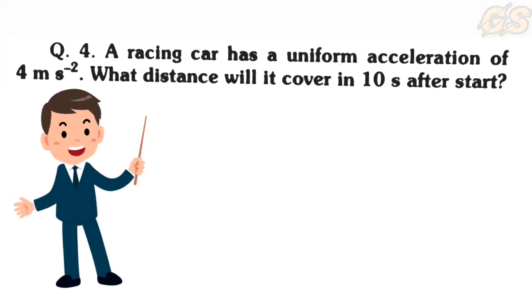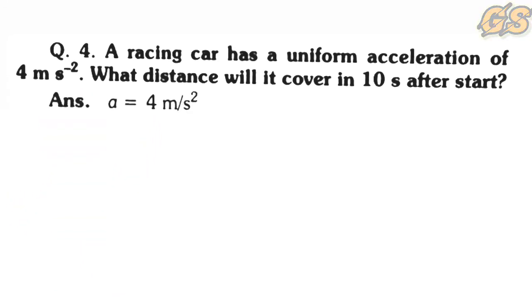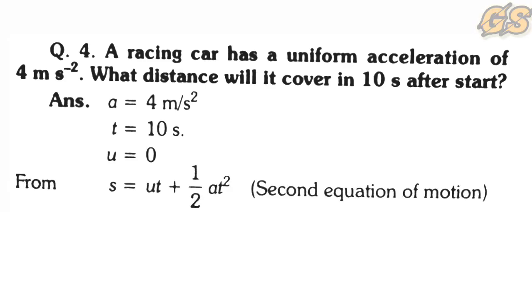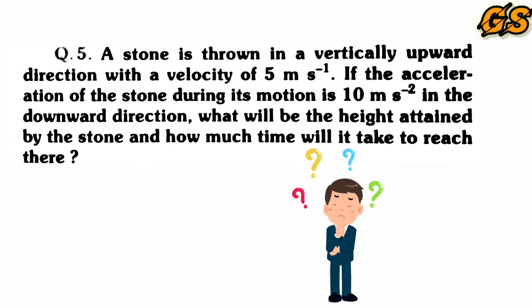Question 4: A racing car has a uniform acceleration of 4 m/s². What distance will it cover in 10 seconds after the start? Given: a = 4 m/s², t = 10 seconds, u = 0. Using the second equation: s = ut + ½at². Substituting: s = 0 + ½ × 4 × 10² = 200 meters.